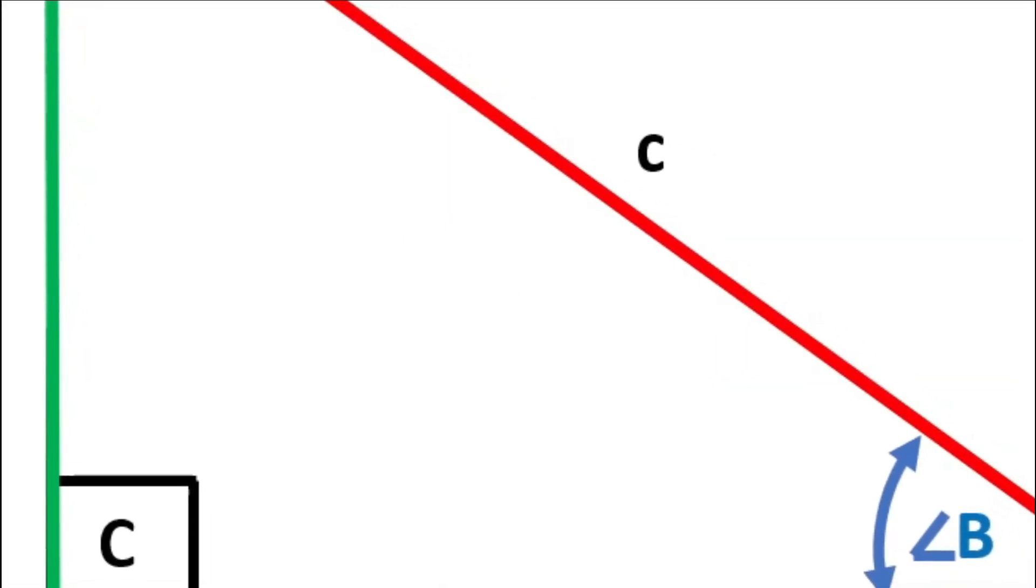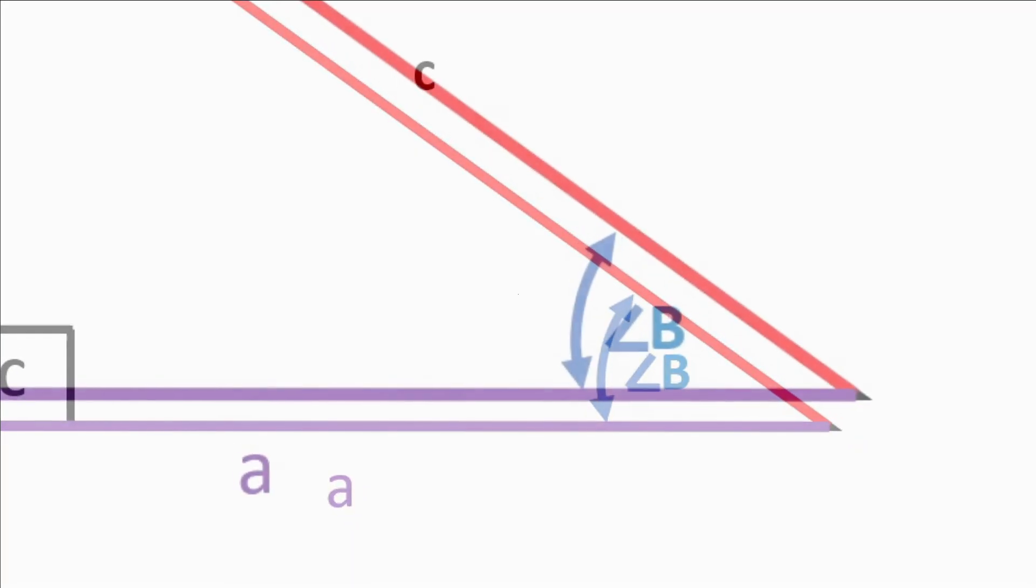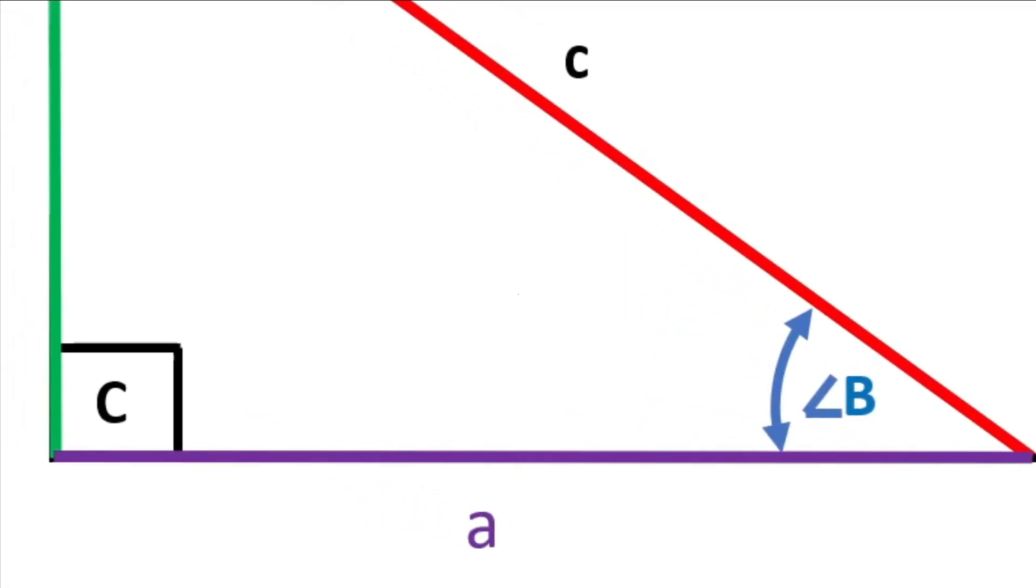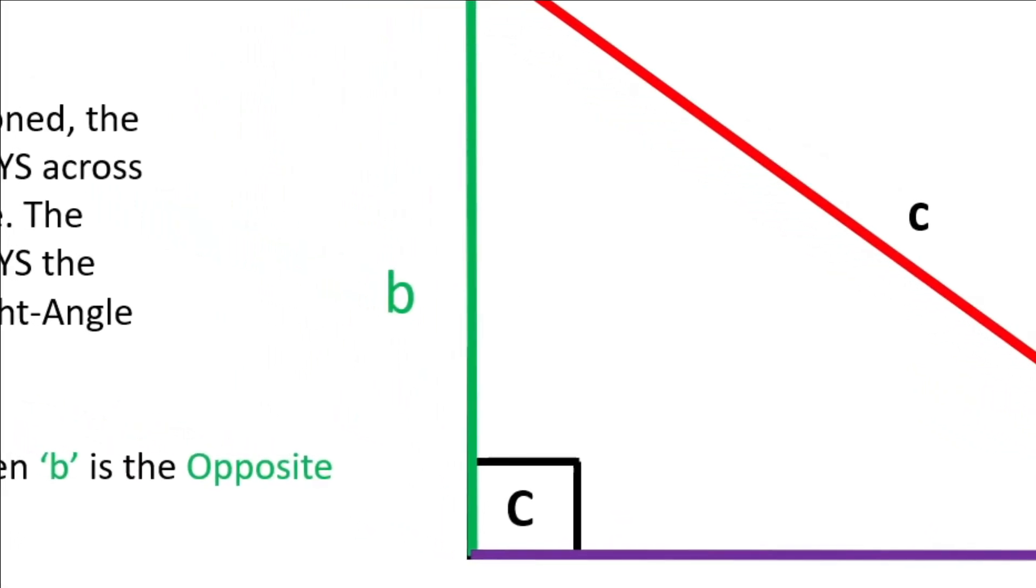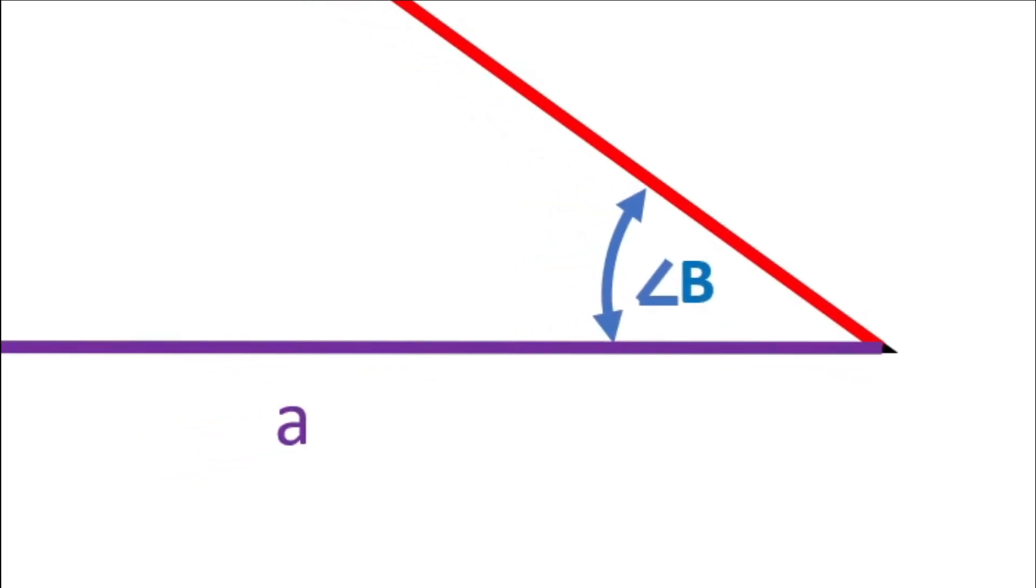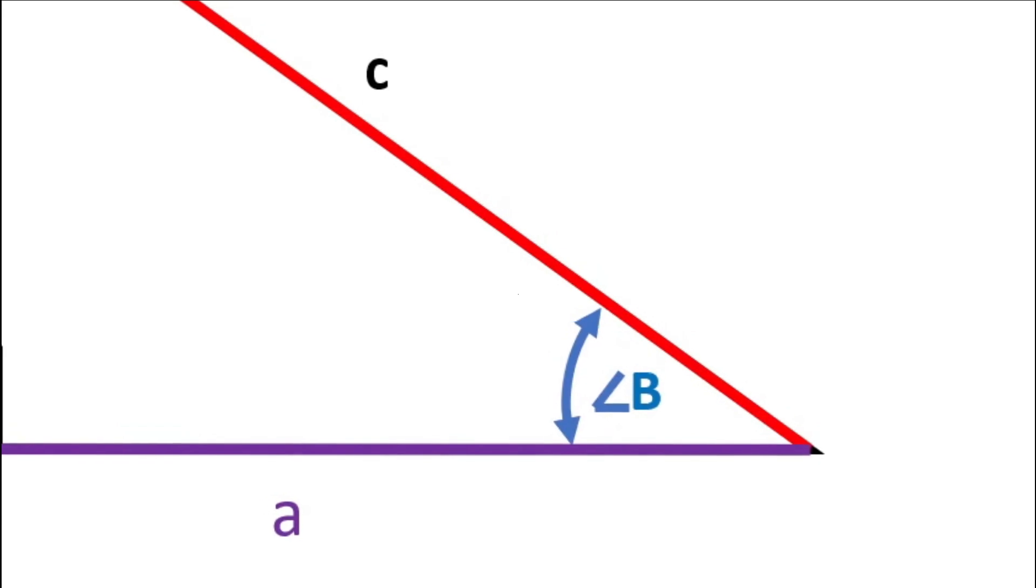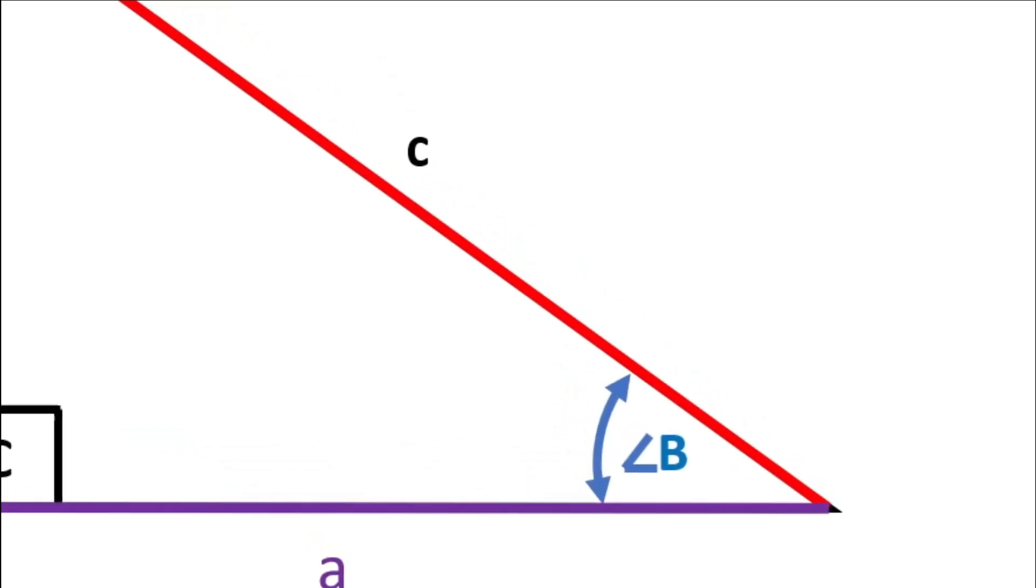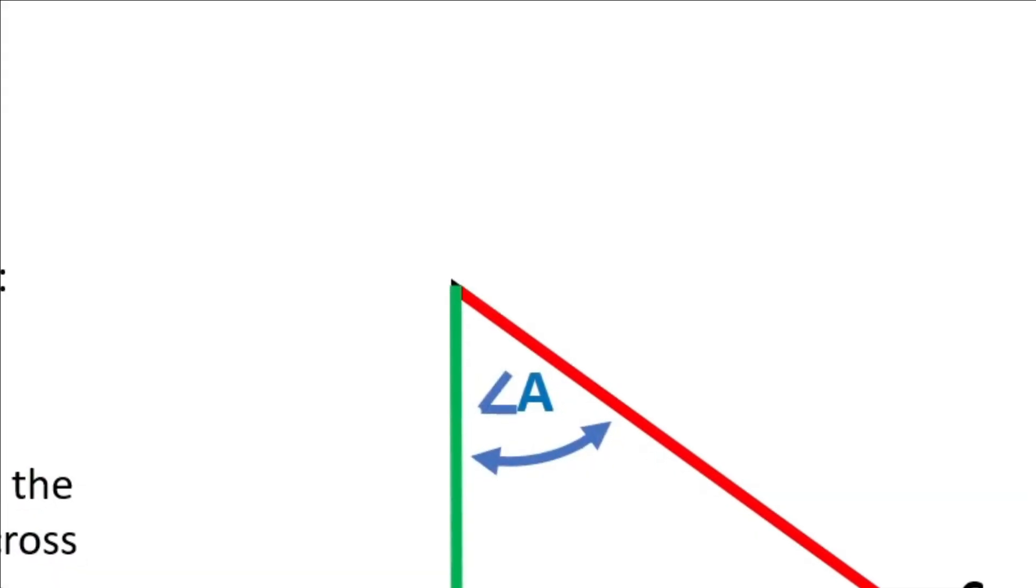In this example, angle B is our reference angle. Therefore side B has to be the opposite side in this triangle. Side A is the adjacent side. Side C is never the adjacent side to an angle, as it's the longest side and is always the hypotenuse.